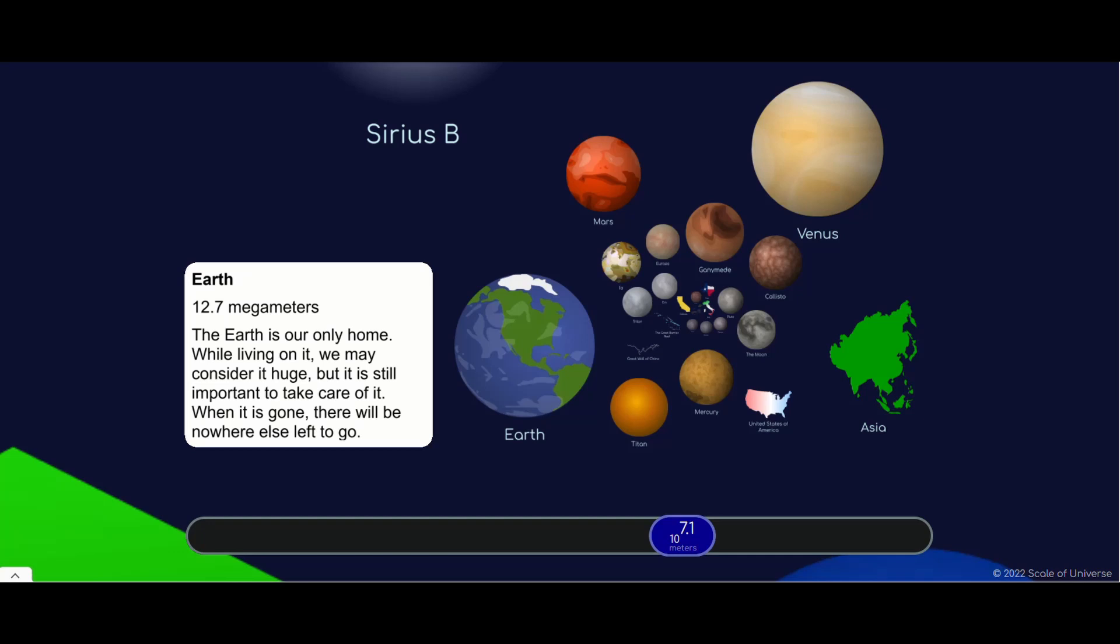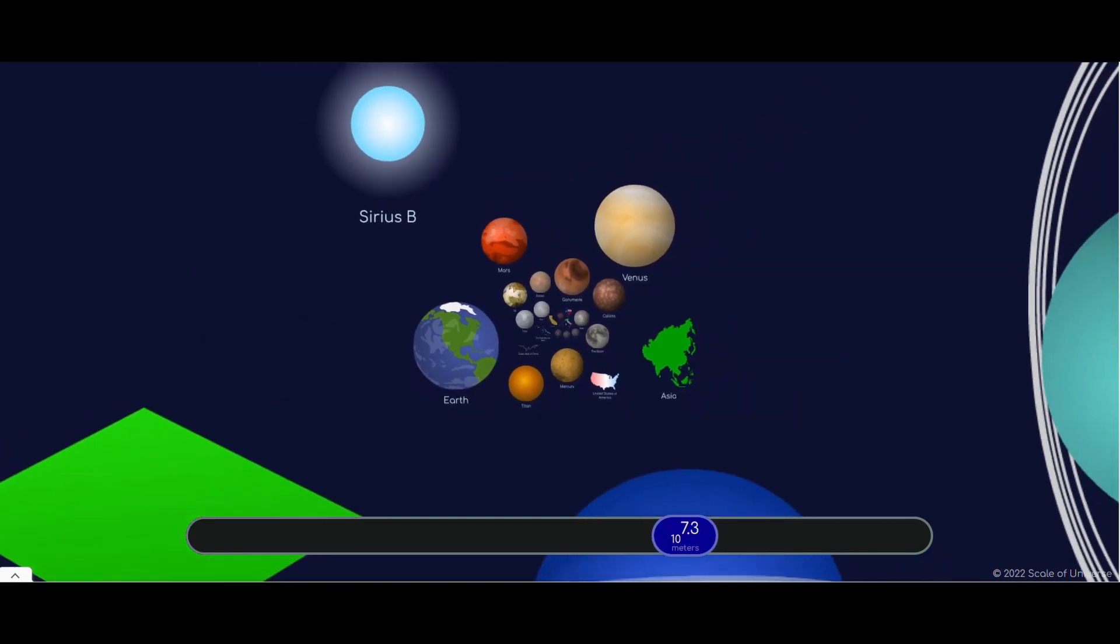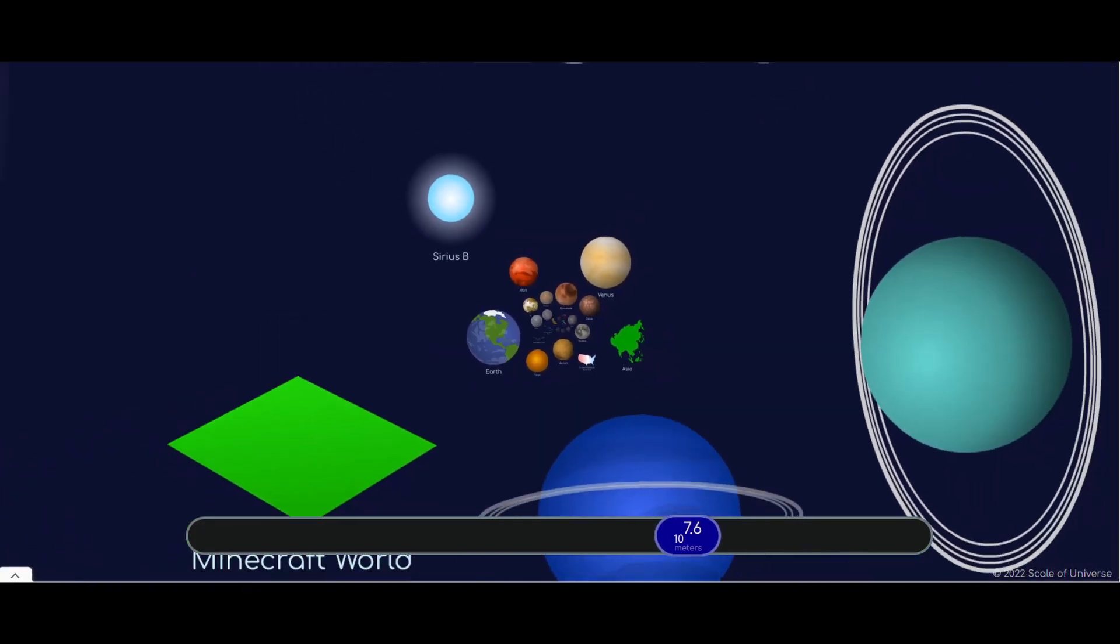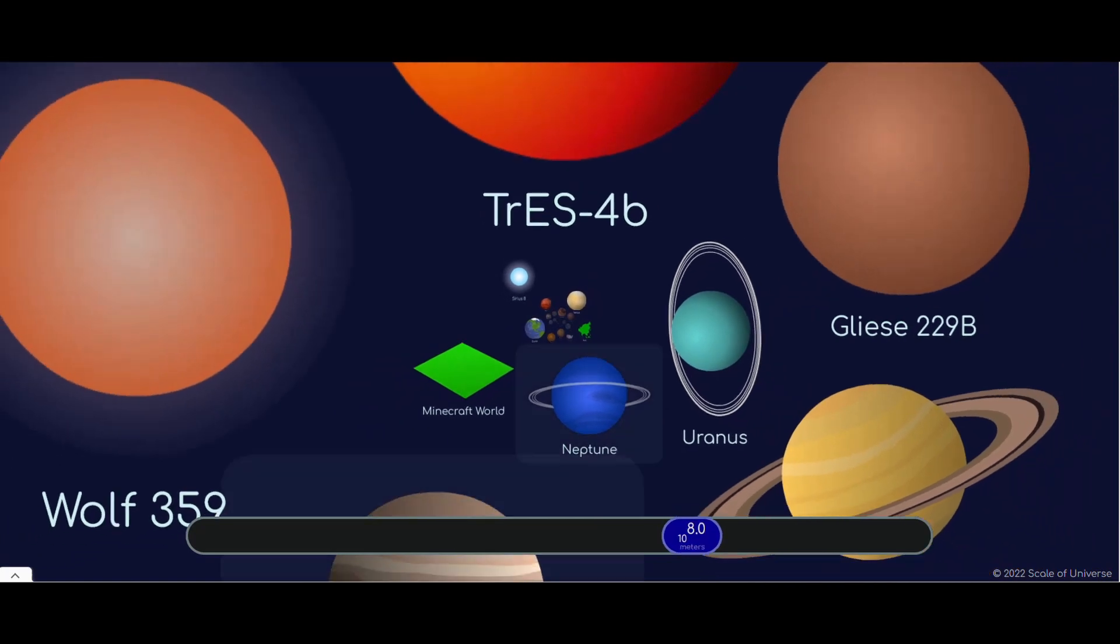You didn't know it took 27 days for the moon to go around the earth, did you? Definitely, we have to take care of earth because you can't live on the moon or any other planet at this point, at least one that we can get to.